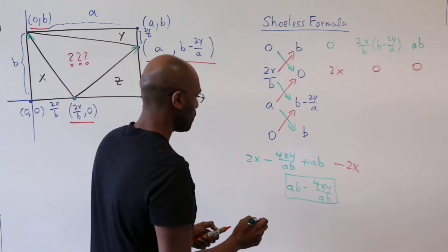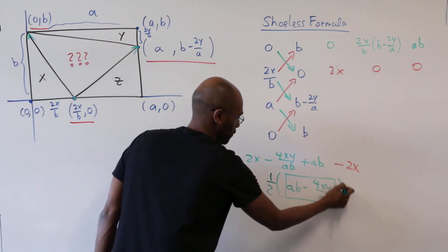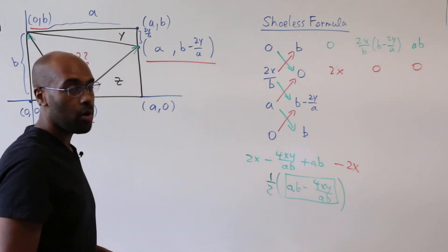I should make one additional note here. The area is actually a half of what you get from the shoelace formula. So our area is a half of this quantity right here.